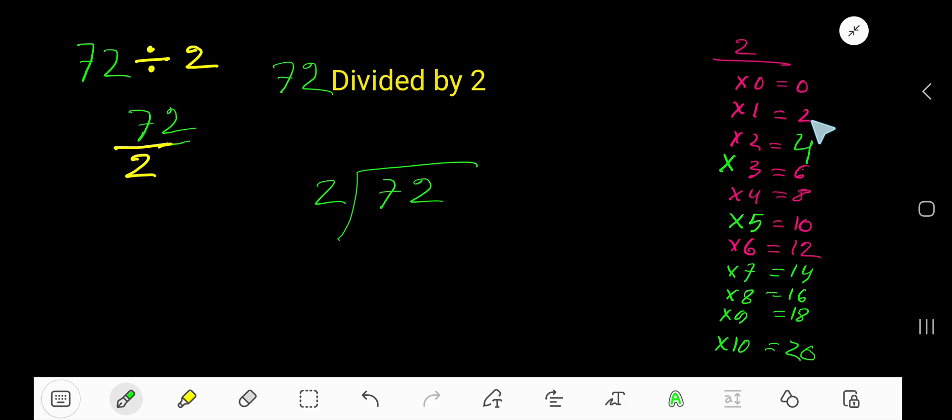Zero plus two two, two plus two four, four plus two six, six plus two eight. So this is the way to find out the multiplication table of two. Now look, two goes into seven how many times?